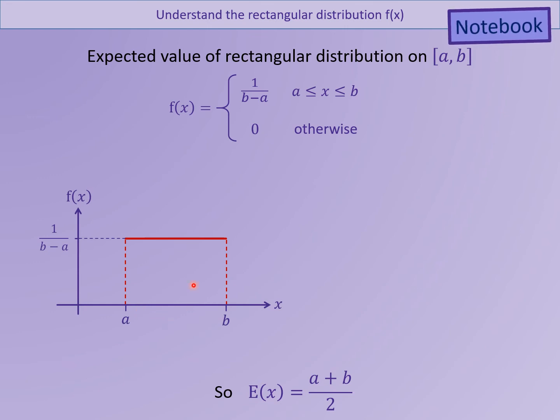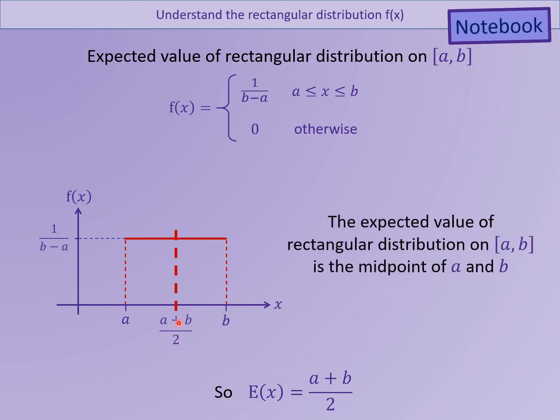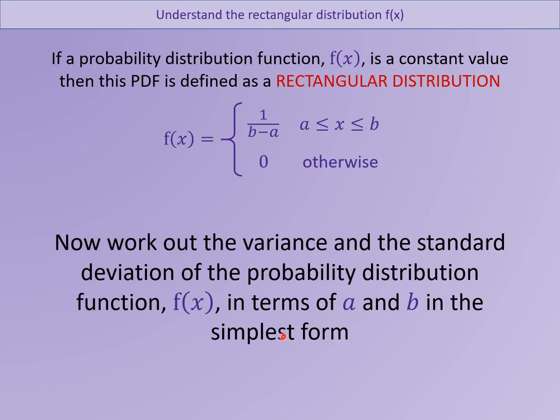This is just re-emphasizing what I just said. So what is that expected value on the graph? There we go. Your expected value is the midpoint of a and b. Smack bang in the middle. That's exactly what you would expect.